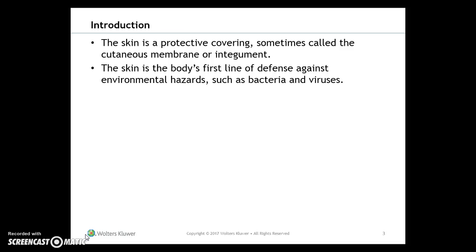Let's talk a little about the integumentary system. It refers to the skin, sometimes called the cutaneous membrane or integument, meaning protective covering. Cutaneous means relating to the skin, and it consists of two layers: an outer epidermis and an inner dermis. The skin is the body's first line of defense against environmental hazards such as bacteria and viruses.